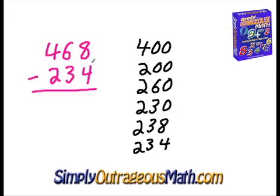Really in this example we're adding all the numbers on the top in each place value and subtracting all the numbers on the bottom. To go through again: 400 minus 200 gives us 200. Then 200 add 60 is 260. 260 minus 30 is 230. 230 plus 8 is 238. And 238 minus 4 is 234.